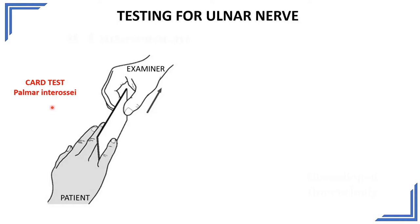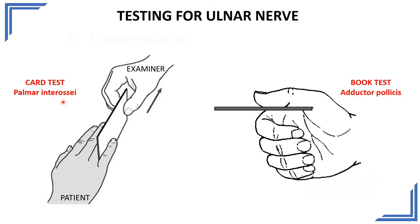Another test is asking the patient to fan out or stretch out his fingers against resistance by the examiner. Here we are testing the abduction capacity of the fingers, which is done by the dorsal interossei, also supplied by the deep branch of the ulnar nerve. Another test is the book test, where a thick object like a book is placed between the thumb and index finger. The patient is asked to hold it tightly between the adjacent sides of the thumb and index finger, and the examiner exerts traction on the book. This tests the adduction capacity of the thumb, done by adductor pollicis, also supplied by the deep branch of the ulnar nerve.